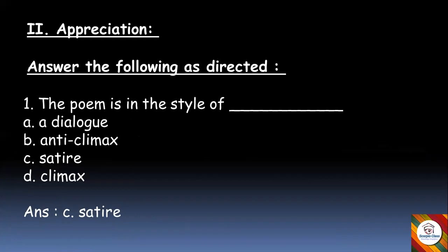Moving on to the next section — Appreciation. We have to answer the following as directed. First is an MCQ question: The poem is in the style of dash. The options are: A) a dialogue, B) anti-climax, C) satire, or D) climax. The answer is option C — satire. Satire means a humorous, funny kind of writing which makes you laugh. The lines in this poem make us laugh, so it is a satire form of writing.